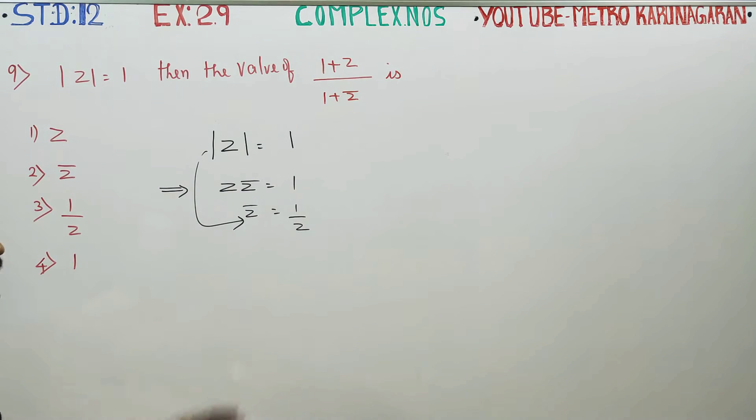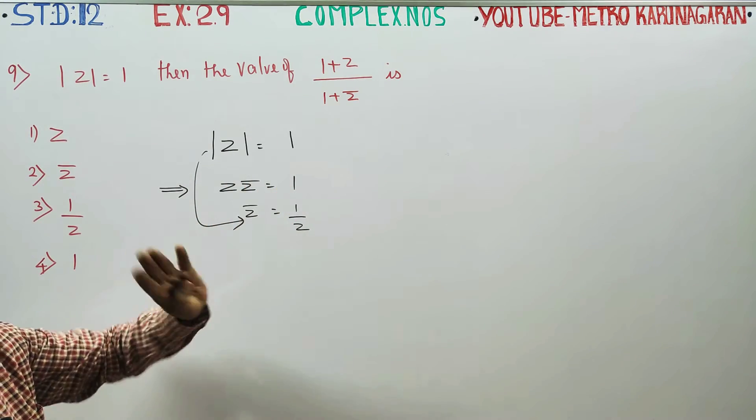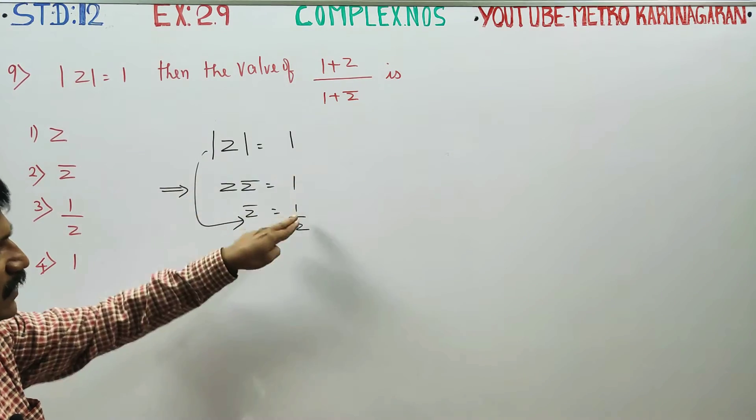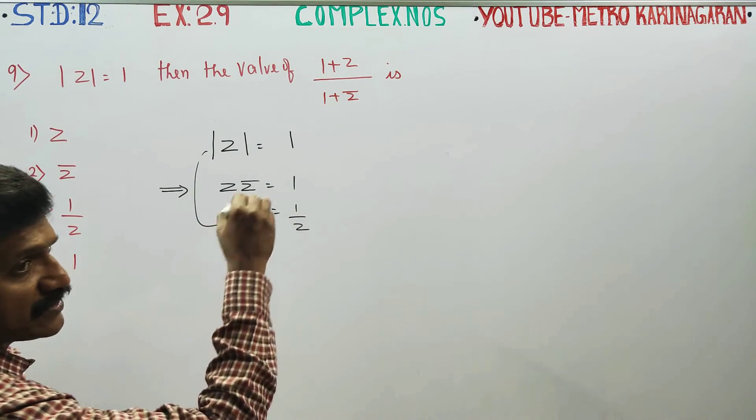1 is equal to 1, we can do. If you are 1, we can do 2. 1 is equal to 2, this is the ready-made formula. 2 is equal to square.